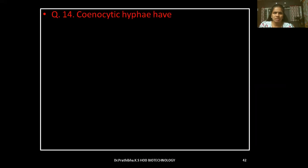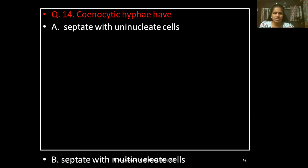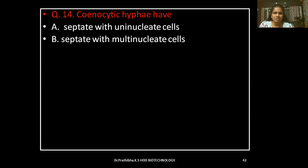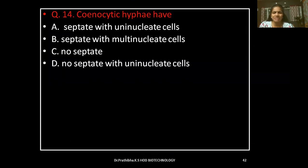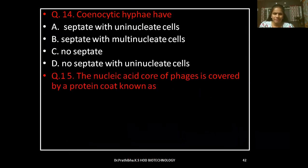Question 14: Coenocytic hyphae have — septate with uninucleate cells, septate with multinucleate cells, no septate, or no septate with uninucleate cells.